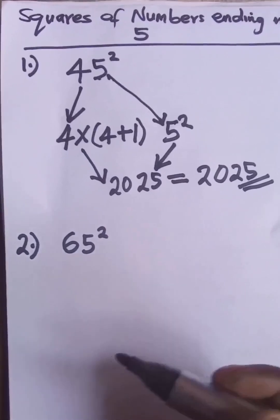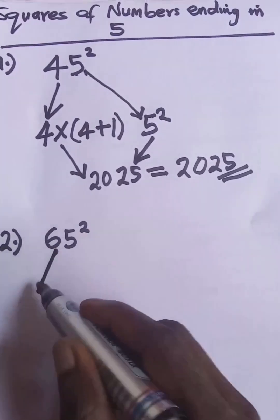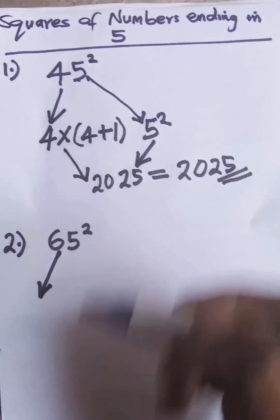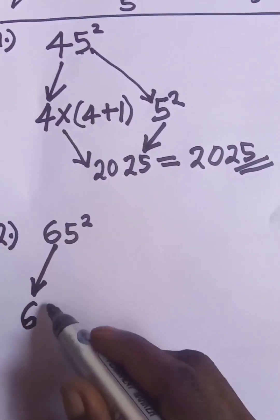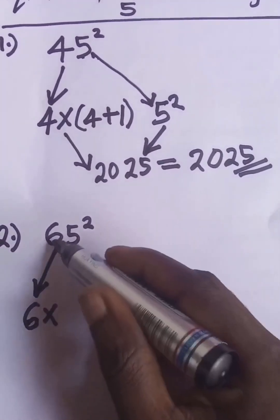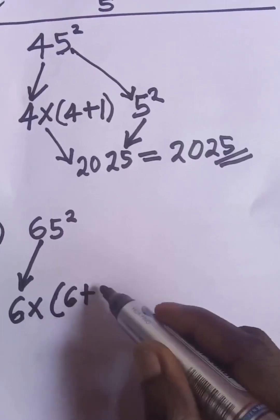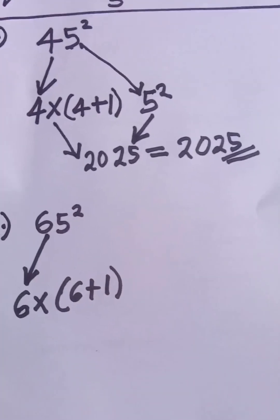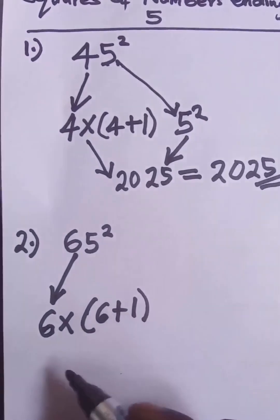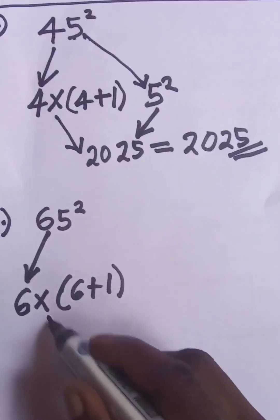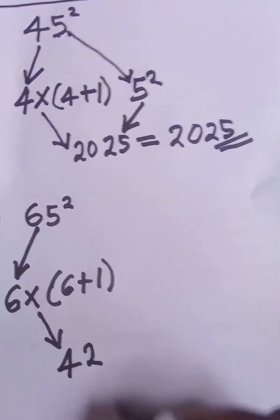The second question is 65 squared. Same procedure — for the first part, take the tens digit 6 and increase it by 1: 6 plus 1 is 7. So 6 times 7 is 42. That is the first part.